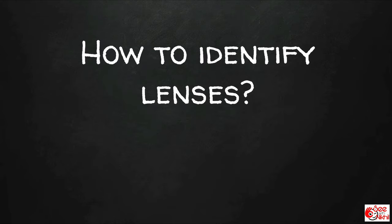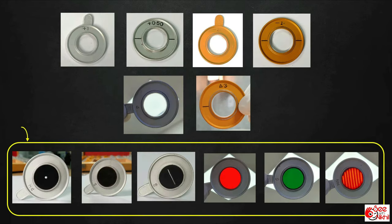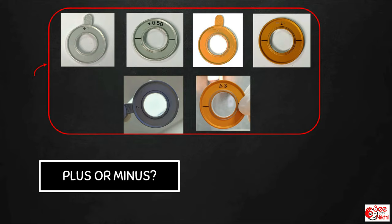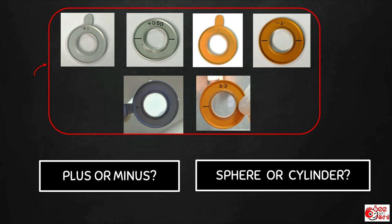The basic and most important thing you need to know about the lenses is their identification. Accessory lenses have a very unique design so identifying them is usually not a problem, while other lenses need some evaluation to identify them, especially if powers are not mentioned over them as in exams or in spectacles. So we try to find out whether it is a plus lens or a minus lens, and then whether it's a sphere or a cylinder.